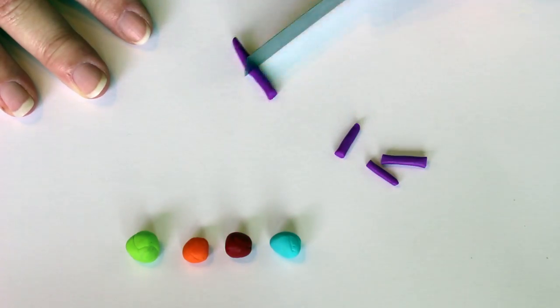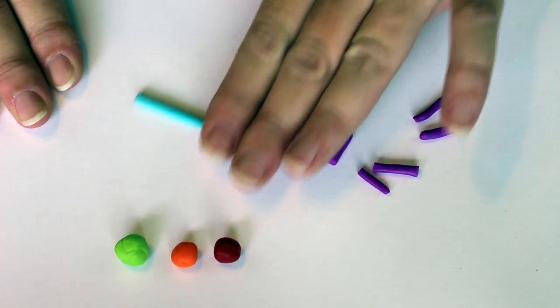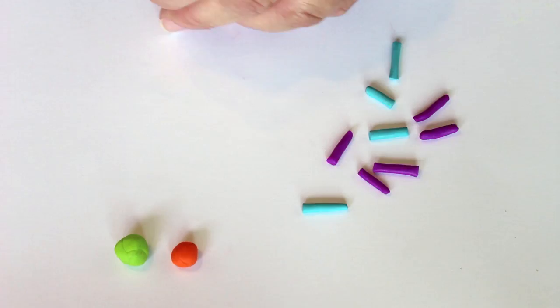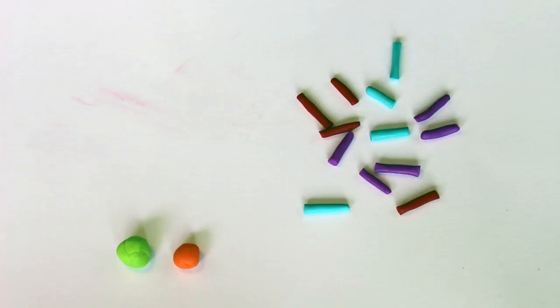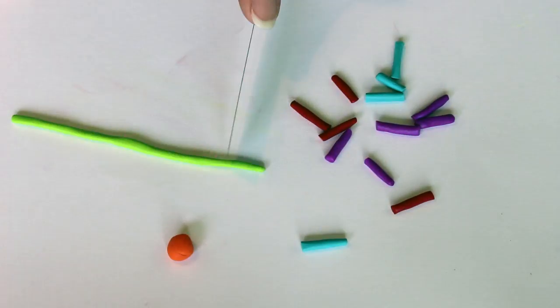Roll out snakes of magenta, green, orange, red and aqua clay. Cut into inch long pieces. The pieces do not need to be exactly measured, they can all be a little different. Bake according to package instructions.